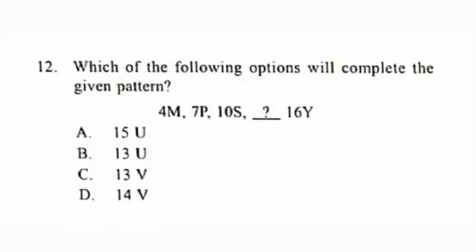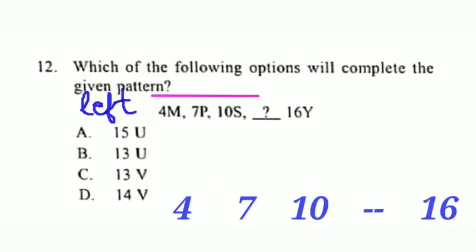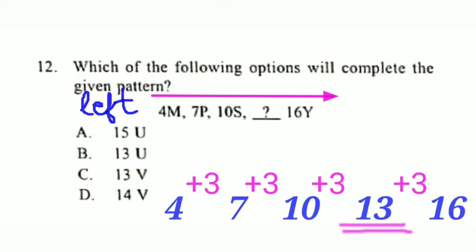Question number 12: Which of the following options will complete the given pattern? The pattern is 4M, 7P, 10S, ?, 16Y. Looking at the numbers 4, 7, 10, dash, and 16, each number increases by 3 when you proceed from left to right. So 4 plus 3 equals 7, 7 plus 3 equals 10, 10 plus 3 equals 13, 13 plus 3 equals 16.